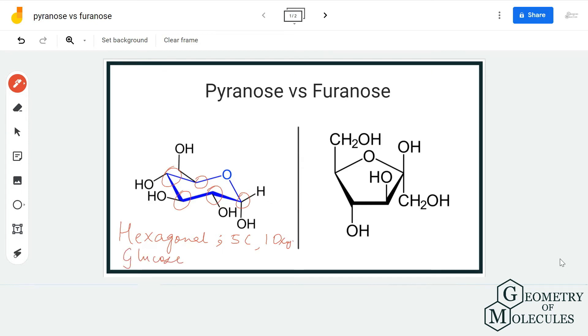Glucose will have this pyranose ring. When you come to fernose, it has a pentagonal structure, so it will have four carbon atoms and one oxygen atom as you can see over here. The basic difference between these two ring structures is that this one is a hexagonal structure, this one is a pentagonal structure.